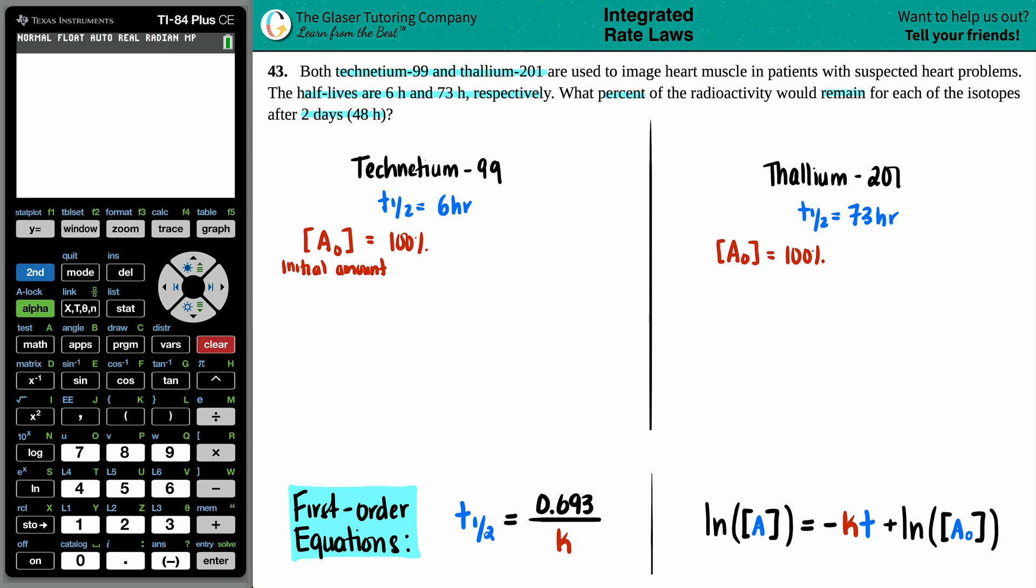Cool. But now we want to find out what the final is. And the final generally is just written as A, no subscript zero. So that's a question mark, right? We want to find out how much is remaining and how much is remaining in 48 hours. So two days. This is a time interval, right? It's a generalized time interval.